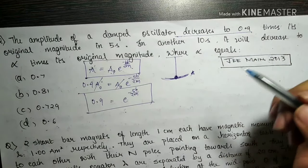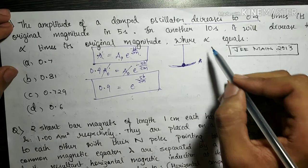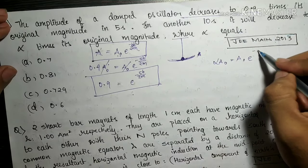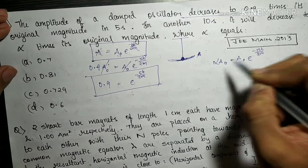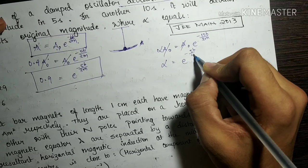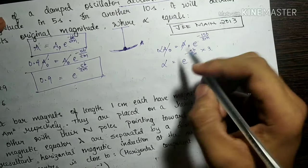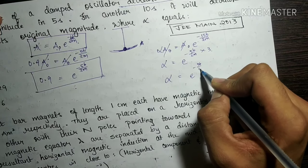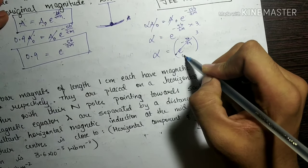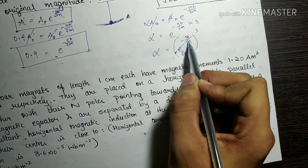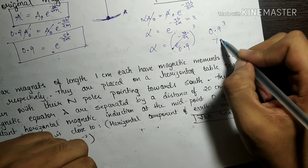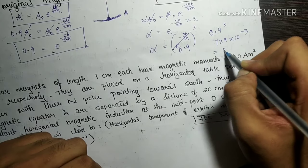In the second case, another 10 seconds pass, so total time is 15 seconds. α×A₀ = A₀×e^(−15b/2m). Cancelling A₀: α = e^(−15b/2m) = (e^(−5b/2m))³ = 0.9³. Since 0.9³ = 729×10⁻³ = 0.729, option C is the correct answer.